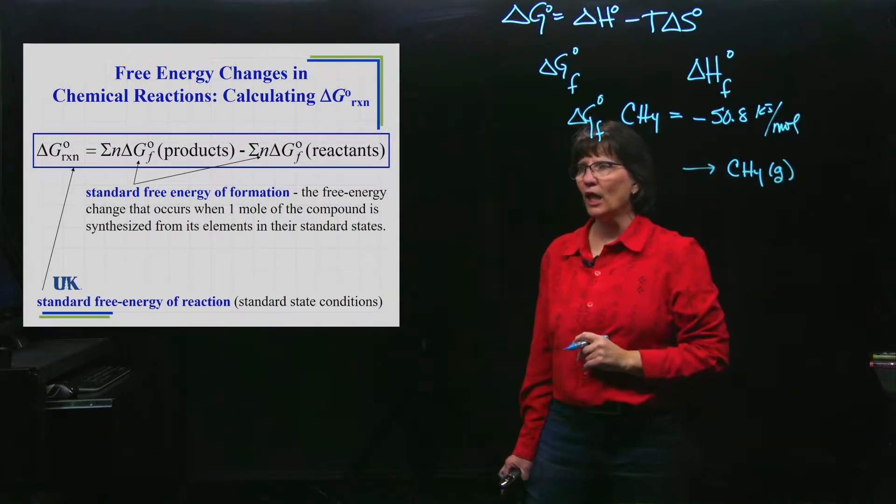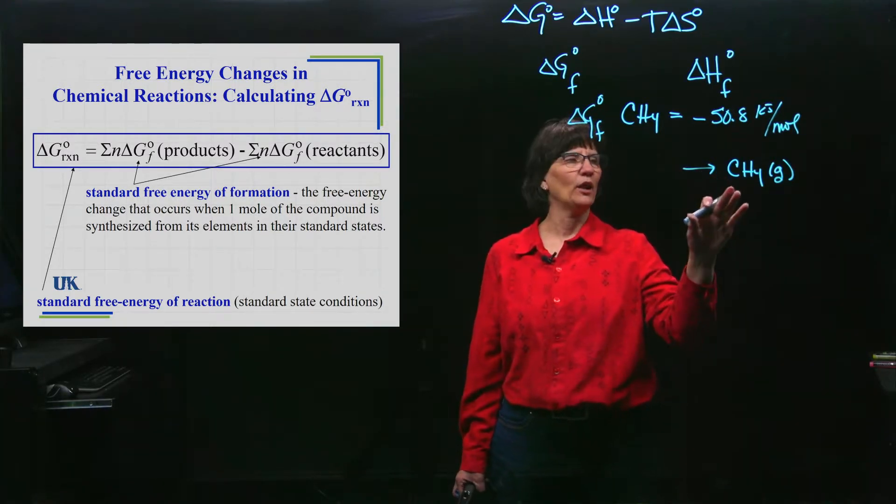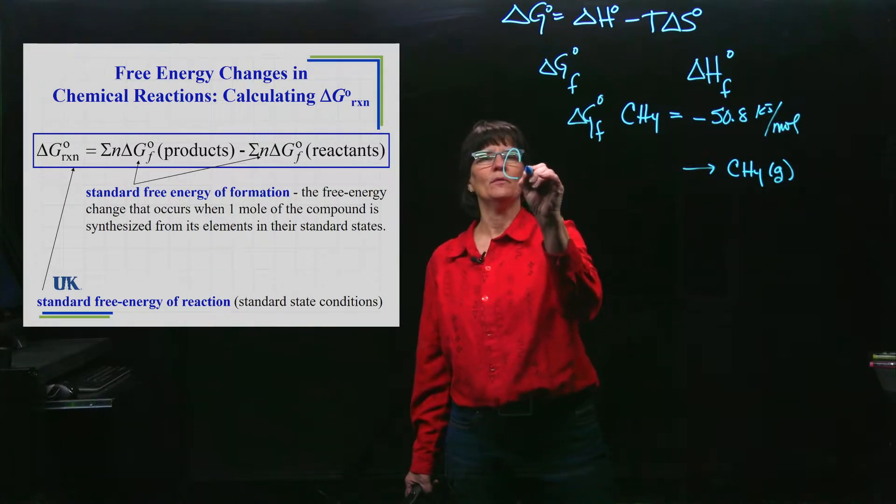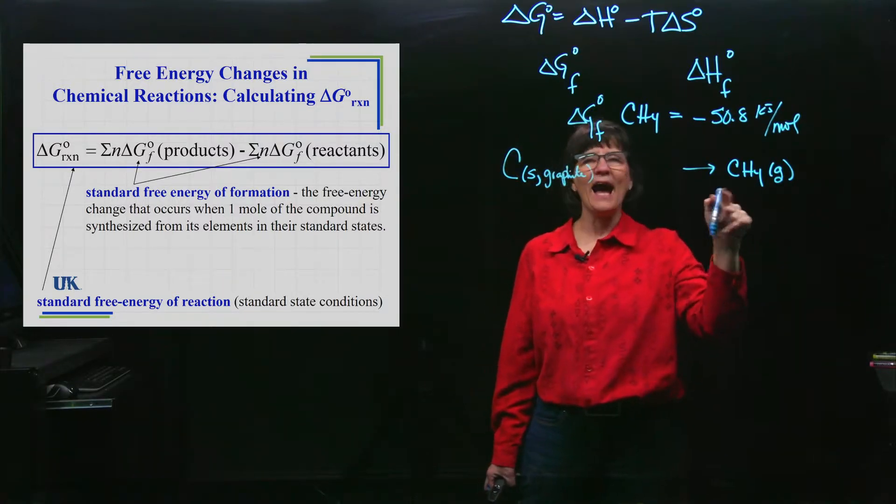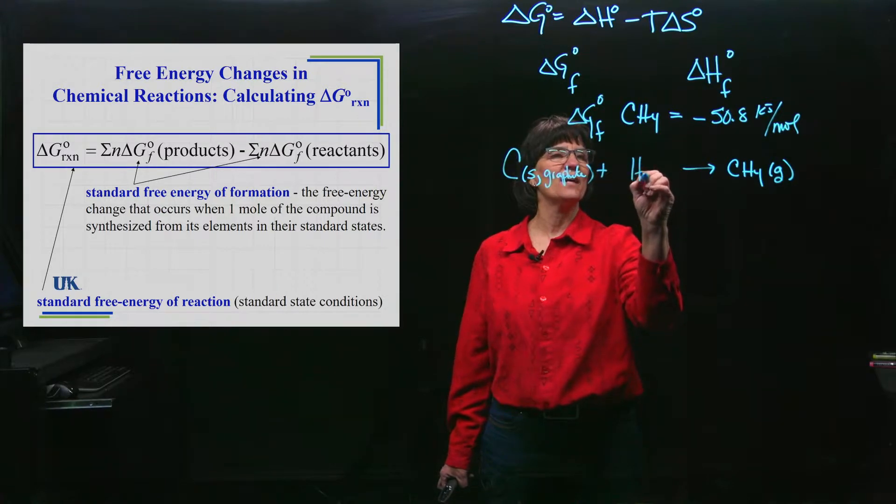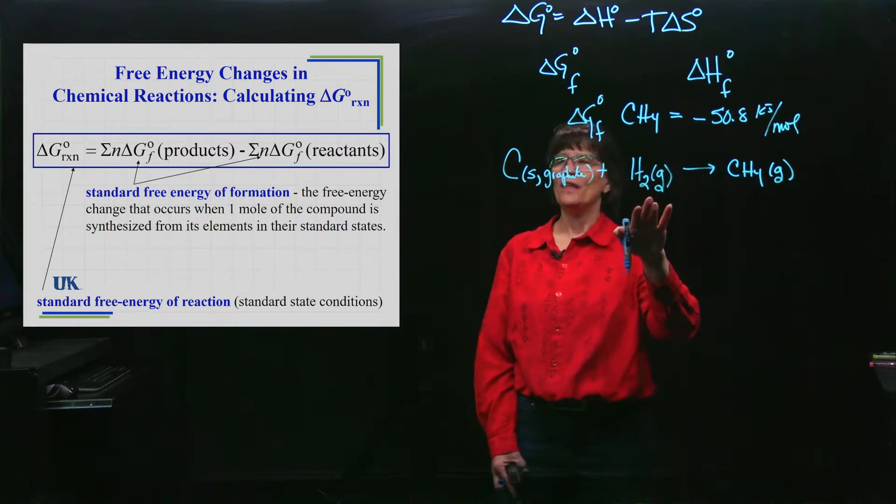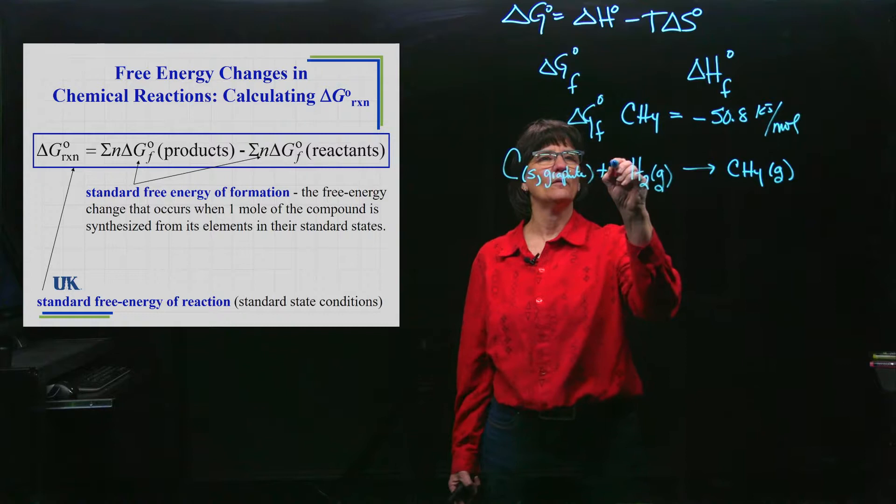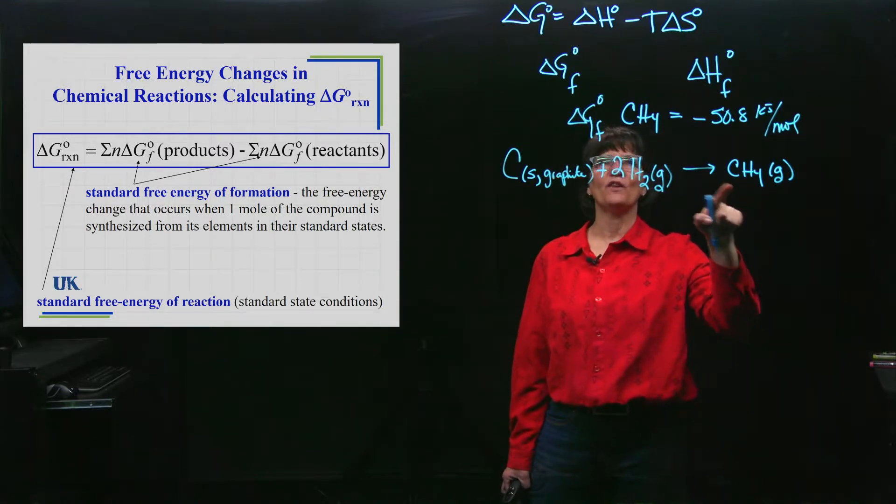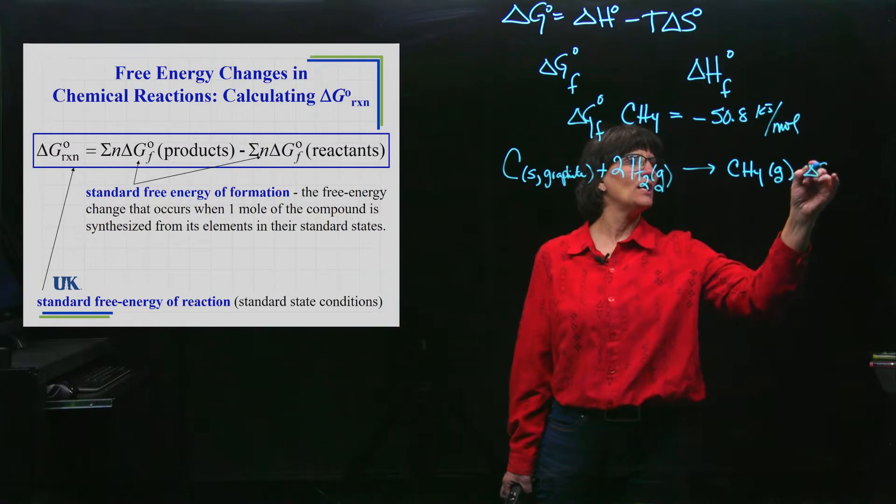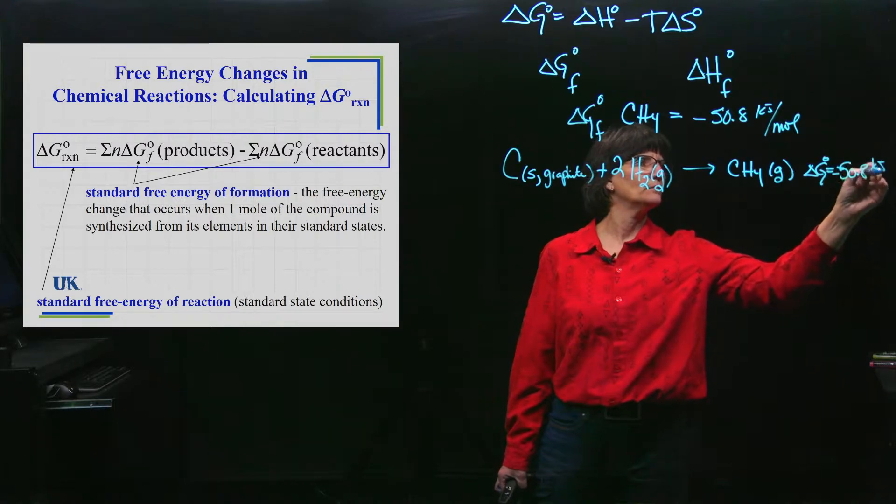The standard state is the most stable state of that element. Carbon is most stable as a solid in the form of graphite, and hydrogen is most stable as a diatomic element that's a gas. Those are the most stable forms of carbon and hydrogen. Then I have to balance it, keeping one mole over here. So when I look up a Delta G of formation, I'm looking up the value for this reaction. They're giving me a Delta G for this reaction equal to negative fifty point eight.